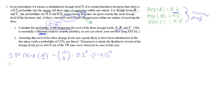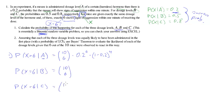Equally, we want to calculate that for the different dosages. For dosage B the success probability is 0.5, so we have 0.5 to the power of 6 times 0.5 to the power of 4, which is just 0.5 to the power of 10. And for dosage C we have 0.8 to the power of 6 times 0.2 to the power of 4.